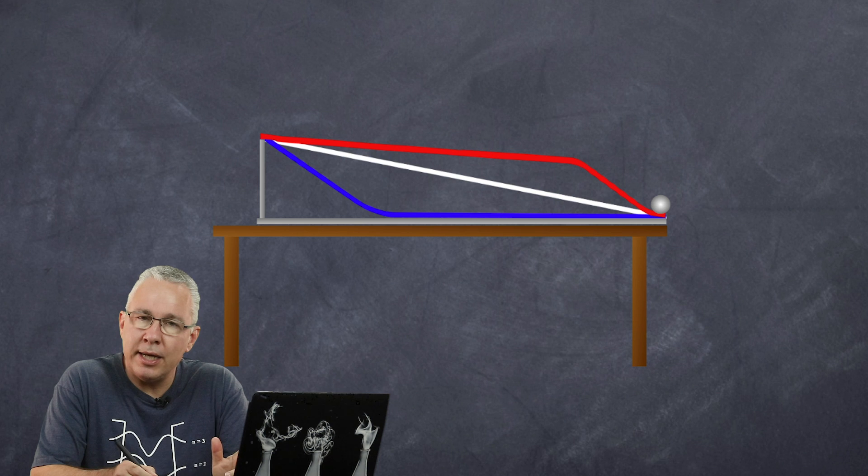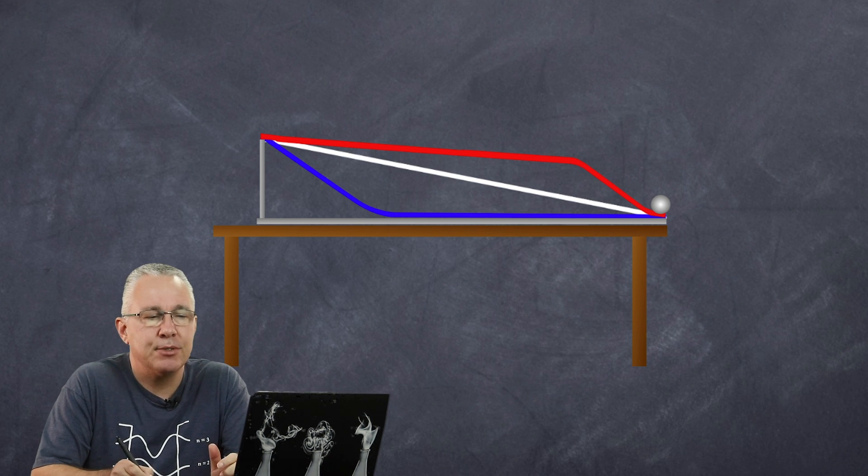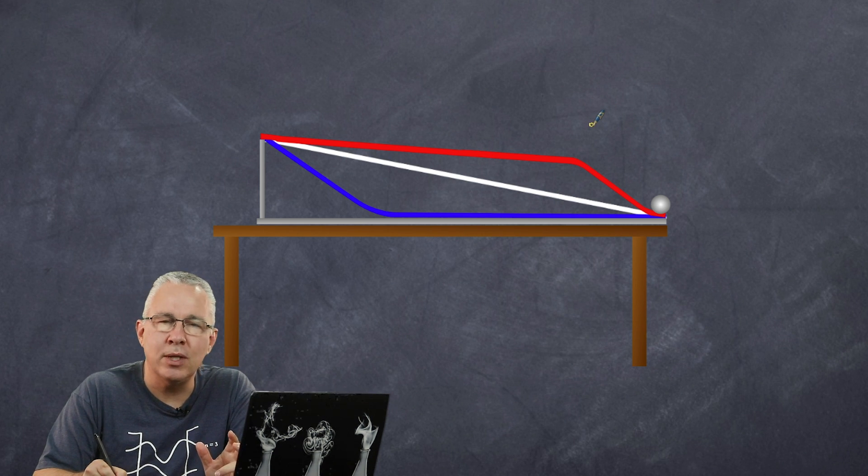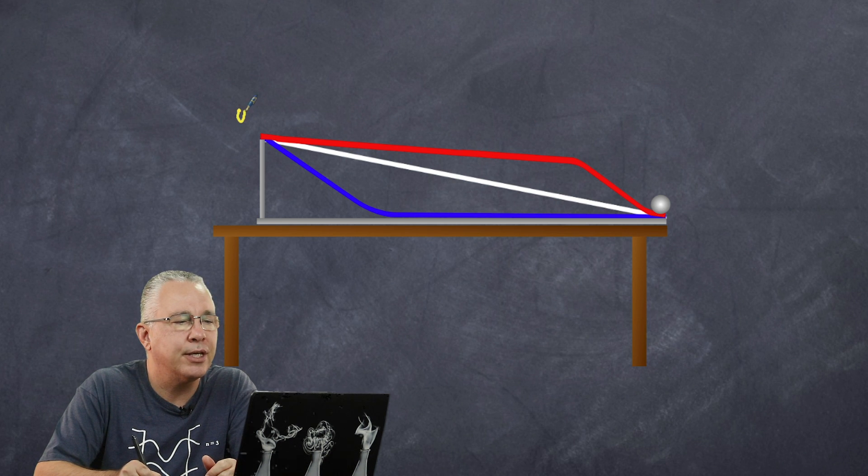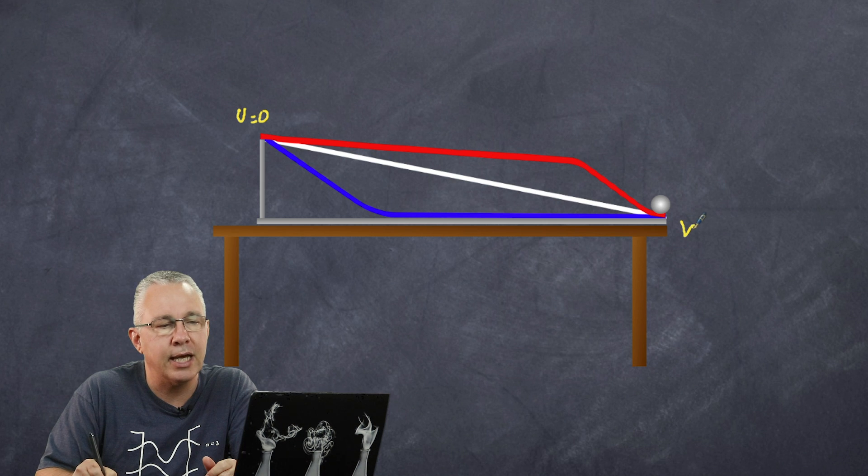So why did they all leave at differing times? Now in our three ramps they all have differing times because of the different accelerations that are occurring along each of their paths. They all start off with an initial velocity of zero and they all end up with a velocity of v at the end. But the accelerations are different.